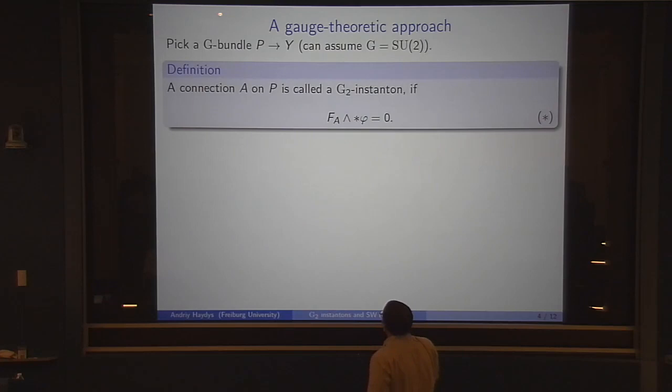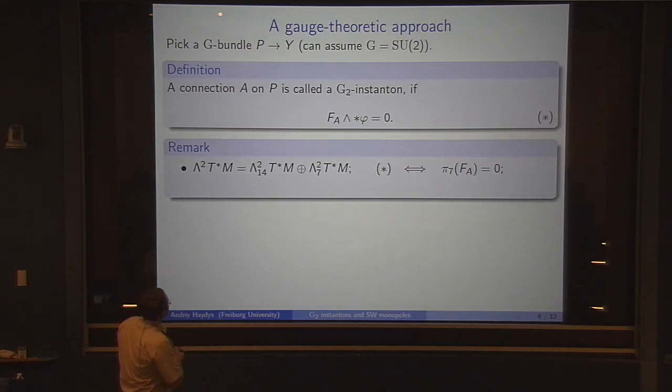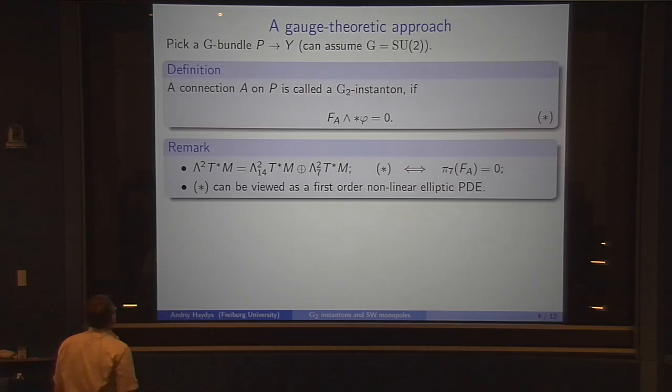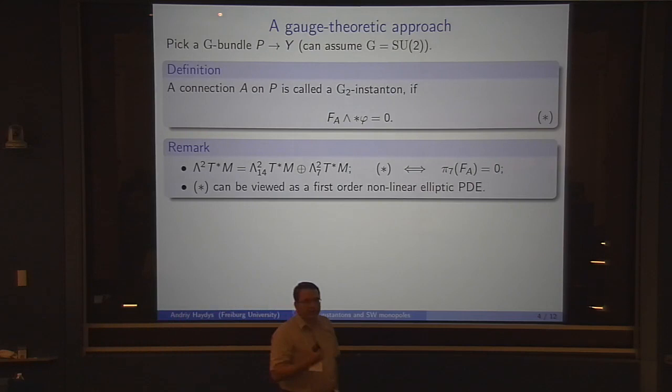A different approach could be through gauge theory. For this, we pick a G bundle, where G is a Lie group, and for this talk it is safe to assume that G is SU(2) or SU(n). A connection on P is called a G2 instanton if it satisfies this equation on the screen. Because the holonomy group is not the full SO(n), the bundle of two-forms splits into two chunks.